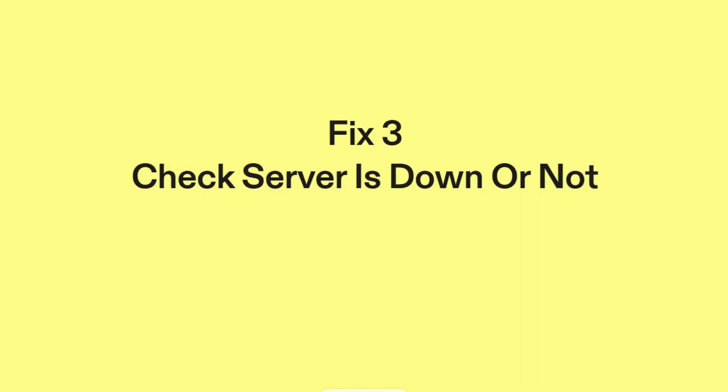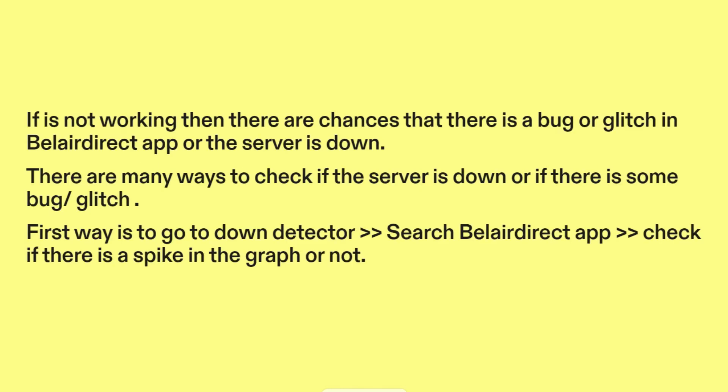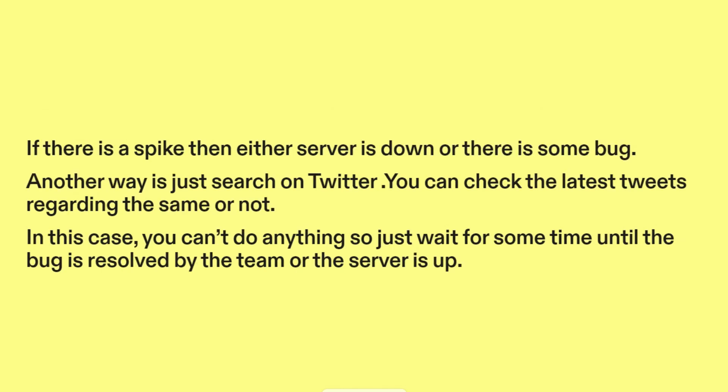Fix three: Check if the server is down or not. If it's not working, there are chances that there is a bug or glitch in the Belair Direct app, or the server is down. There are many ways to check this. First, go to Down Detector and search Belair Direct app. Check if there is a spike in the graph — if there is a spike, then either the server is down or there is some bug.